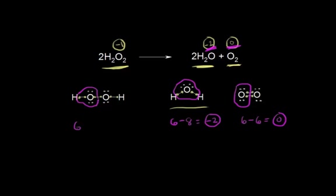This time we have 6 minus — and if you count up those electrons that I've circled, you'll get 7. So 6 minus 7 gives you an oxidation state of negative 1 for oxygen in hydrogen peroxide. The memorization way is faster, but sometimes the dot structure way is very useful.